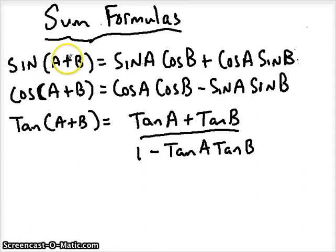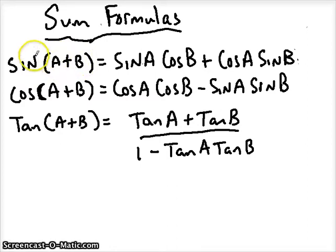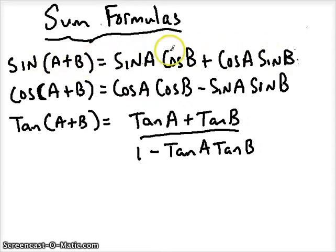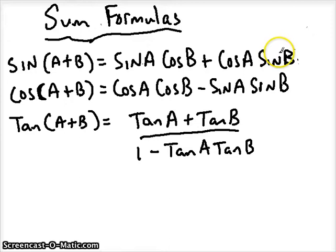There are two different forms, two different sides of the equation. For angles A and B, when you add them and take the sine, it can be expanded into the form on the right side: sine of the first angle times cosine of the second angle, plus cosine of the first angle times sine of the second angle.